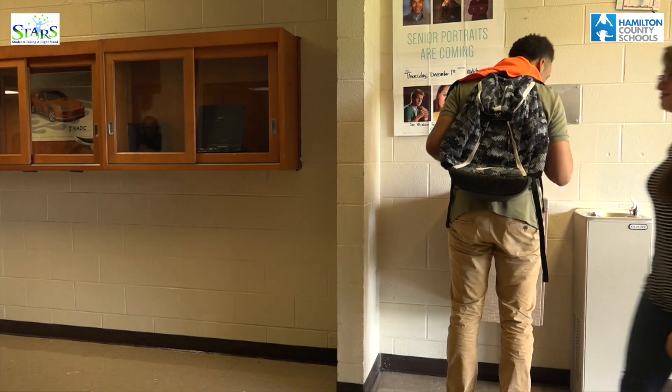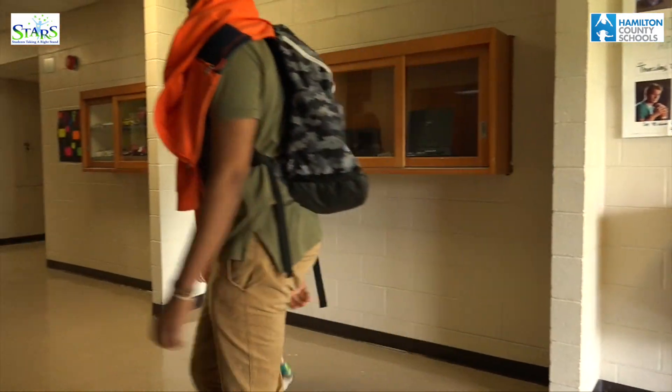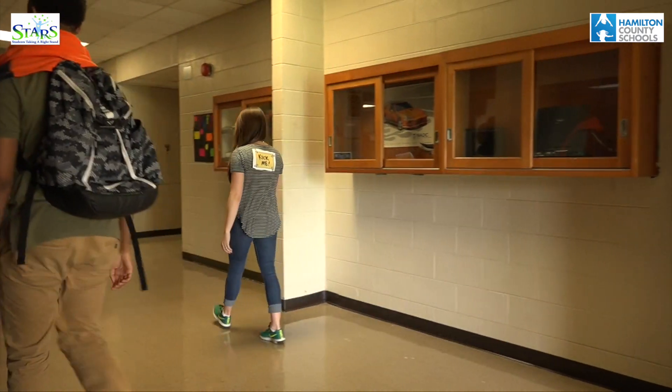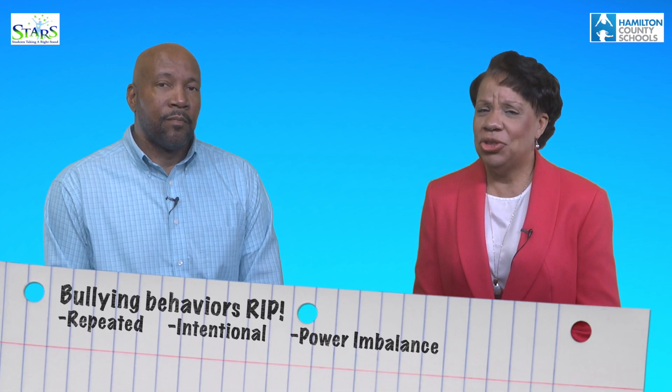Sometimes the boundaries are so blurred. Some behavior is mean, like when someone is intentionally hurtful without focusing on a specific target. Some behavior is just rude, like when someone is unintentionally hurtful. But bullying behaviors RIP — they are repeated, intentional, and there's a power imbalance.